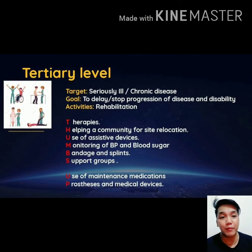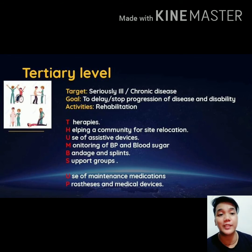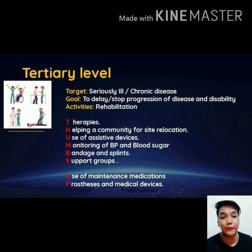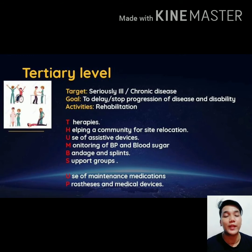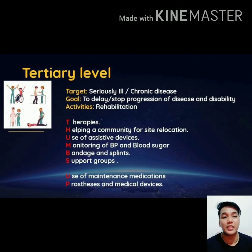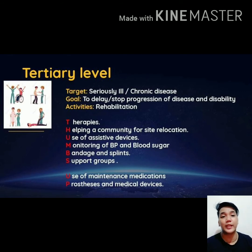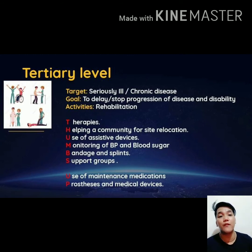To recap THUMBS UP for tertiary prevention: T — any form of therapies; H — helping clients with relocation (e.g., after disasters) and stress debriefing; U — use of assistive devices; M — monitoring blood sugar and blood pressure to prevent complications; B — bandages and splints; U — use of maintenance drugs; P — prosthetic devices and other medical devices.